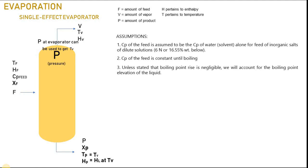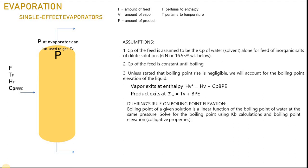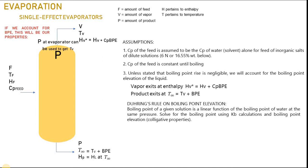The heat capacity of the feed is constant until boiling, unless stated that the boiling point rise is negligible. We will account for the boiling point elevation of the liquid. If we account for boiling point elevation, the vapor will exit at enthalpy equals hv plus heat capacity times boiling point elevation, and the product will exit at T equals tv plus boiling point elevation.